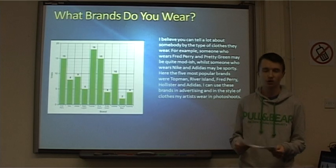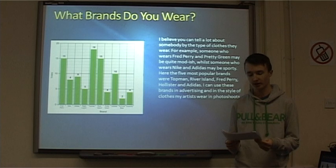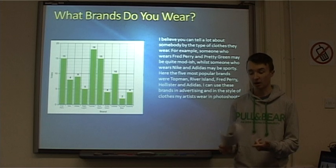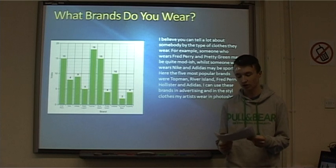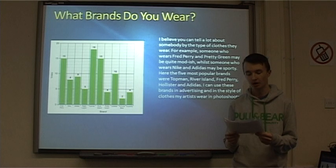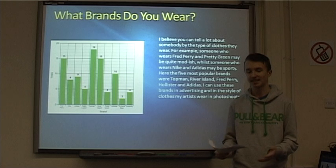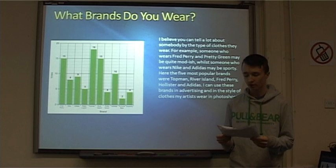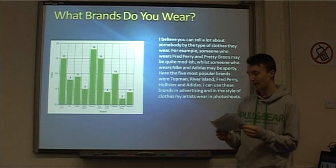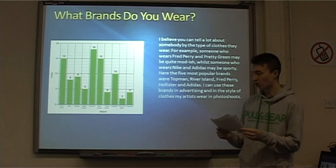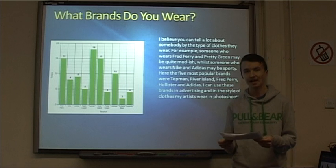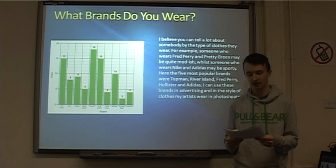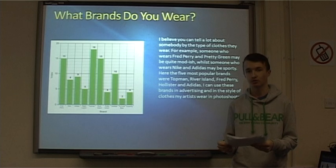I believe you can tell a lot about somebody by the clothes that they wear — their personality, the amount of money they have and their lifestyle. For example, someone who wears Fred Perry and Pretty Green might be quite modish, while someone who wears sporting clothes such as Adidas and Nike may be more active. The top five brands chosen were Topman, River Island, Fred Perry, Hollister and Adidas, so I could potentially use these brands in advertisements in my magazine and my artists can wear these brands in their photo shoots.